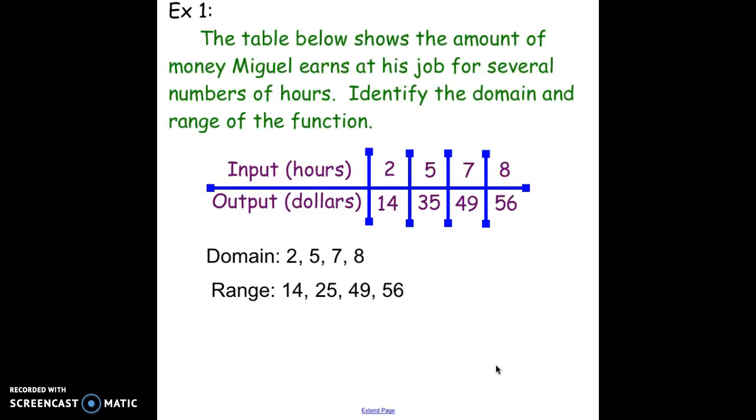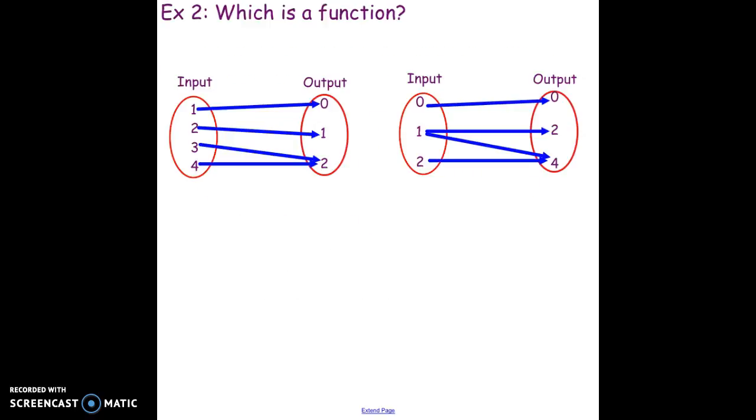Now let's look at which one of these is a function and which one is not. Remember, for every input you can only have one output, but you can have multiple inputs for each output. Let's go back to our vending machine: if I type in C1 I get a Snickers, C2 I get an Almond Joy, C3 I get Cheetos, C4 I get Cheetos. That is a function.